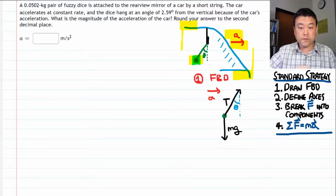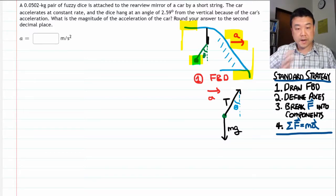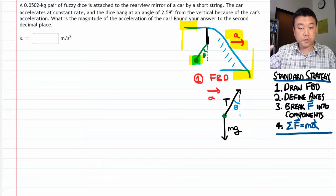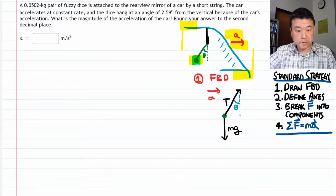So this free body diagram is exactly what we expect to see. In the vertical direction, the forces will balance out. But in the horizontal direction, there will be a net force to the right. Okay. So let's move on to the next step, define axis.